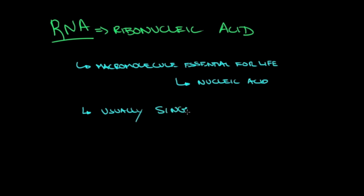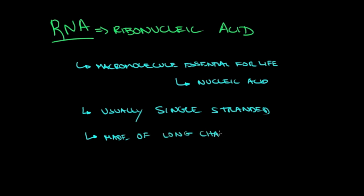RNA molecules are usually single-stranded. Unlike DNA, which is usually present in the double-stranded, ladder-shaped form with two strands of nucleotides, in RNA you usually see only one strand of nucleotides — that's why it is called single-stranded. These molecules are comprised of monomers called nucleotides.